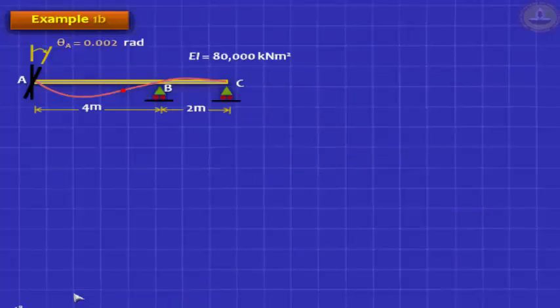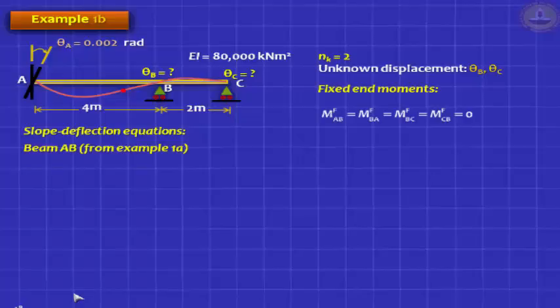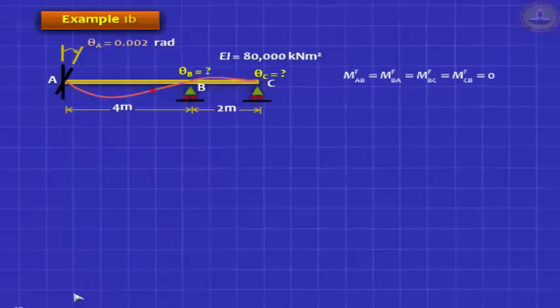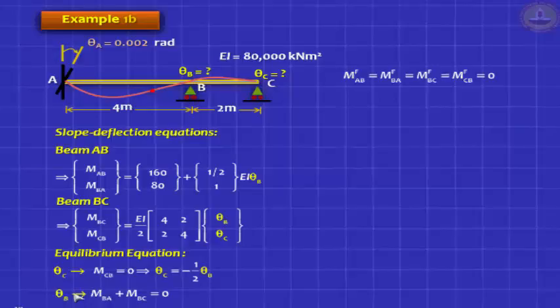Now, let us take the example where we have a roller support at C. Simple, similar. Now, we will again… Now, you have one more unknown. Have you noticed? There is a simplification possible. We will see it in the next class tomorrow, but today we will pretend we do not know theta C, and we now need two equations, but the method is simple. We proceed. We write down the similar equations. We have not repeated it here. It is exactly the same, MAB, MBA, and now we leave theta C there. Theta C is an unknown, and if you write down the equation in the matrix form, they look like this. Equilibrium equation, you have MCB equal to 0, and MBA plus MBC equal to 0.